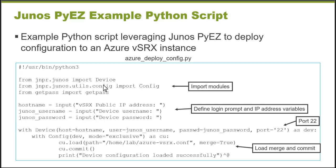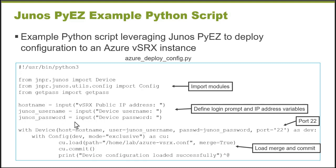Because that public IP address can change every time I spin up an instance, I've imported the getpass module and created some prompts. When this Python script is run, it will prompt the user for the public IP address of the VSRx instance and the username and password. We're using Python context manager — the 'with as' syntax — to tie the device object and the config object together and provide some variables.